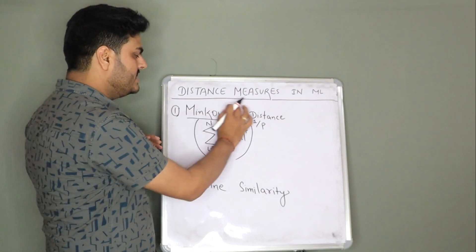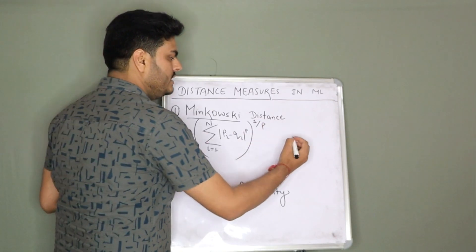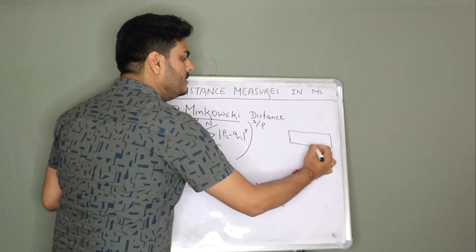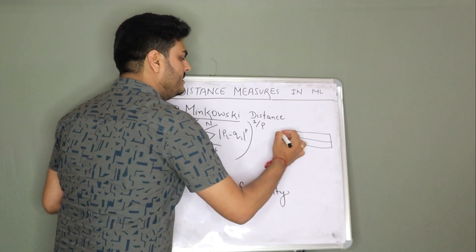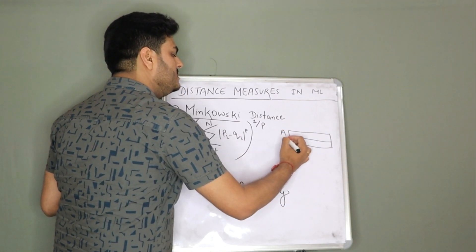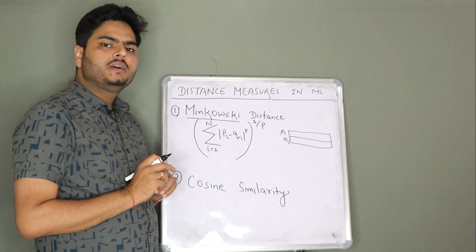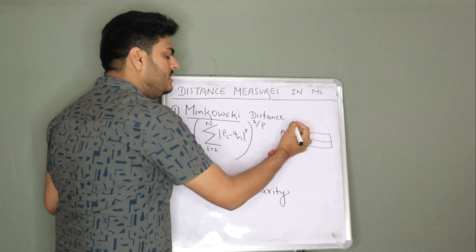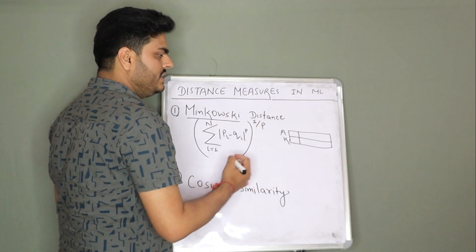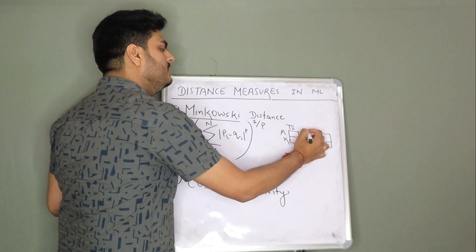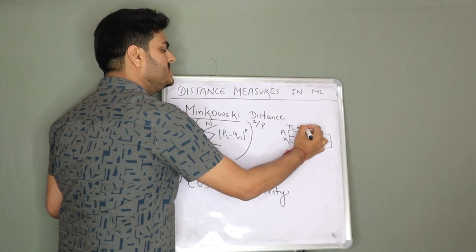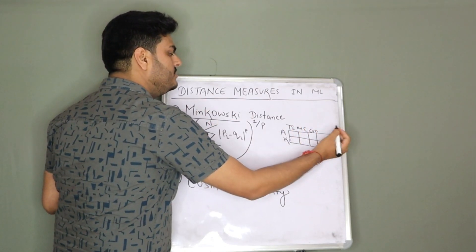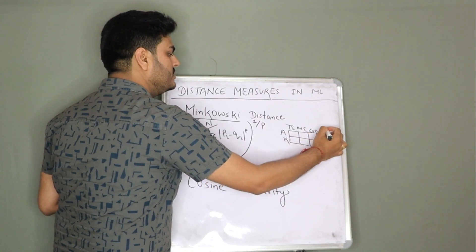Let us take a simple example here. Let us say there is one guy Aman and another guy Kumar. These two guys have different features. For example, feature one is Titanic, feature two is Mission Impossible, feature three is maybe Godzilla, and feature four can be some other movie or series, let us say Game of Thrones.